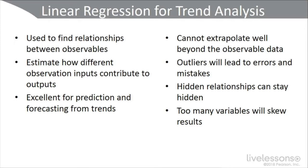There will be outliers with linear regression, which will lead to some errors, mistakes, and false positives. Also, if there are hidden relationships, linear regression may not find those and they may stay hidden, whereas machine learning and big data analysis may actually find those hidden relationships. And if you have too many variables with linear regression, you're going to skew the results.